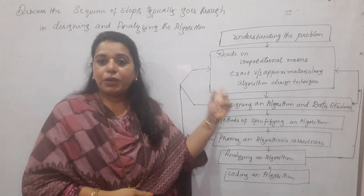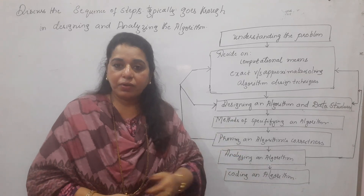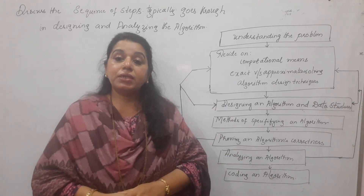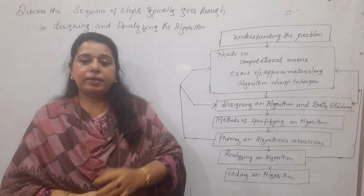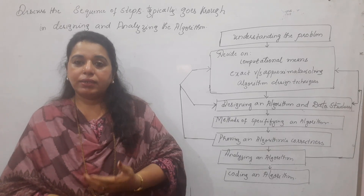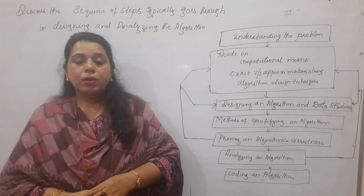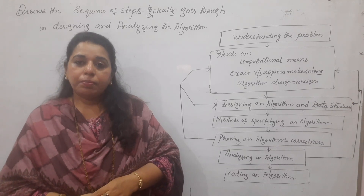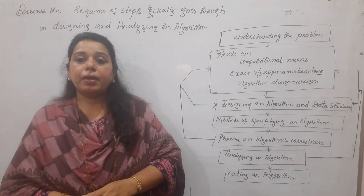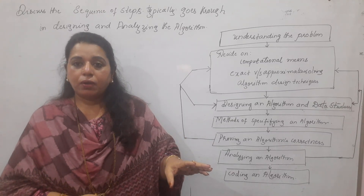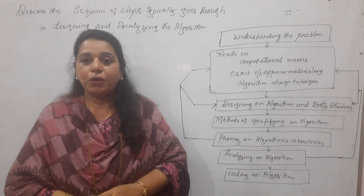The third consideration is deciding on the design technique. We have several techniques: divide and conquer, decrease and conquer, backtracking, recursive, greedy approach, and branch and bound. Designing an algorithm becomes challenging because sometimes these techniques may not be applicable to your problem, and you need to think of combining several techniques to solve it.